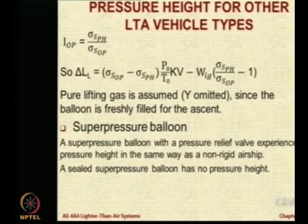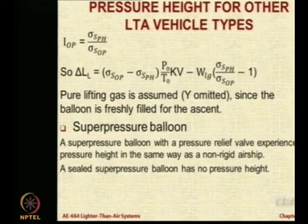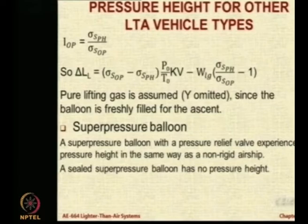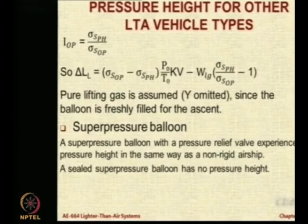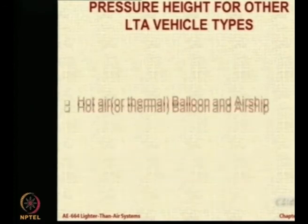Now let us look at the super pressure balloon. A super pressure balloon basically has a pressure relief valve — it has pressure more than what is needed, so it is tight, but there is a pressure relief valve. Just like a non-rigid airship, as it goes up, when the super pressure exceeds the delta P, the valve will open and it will just keep going up.